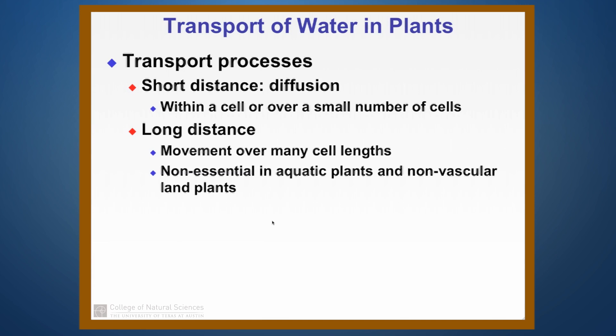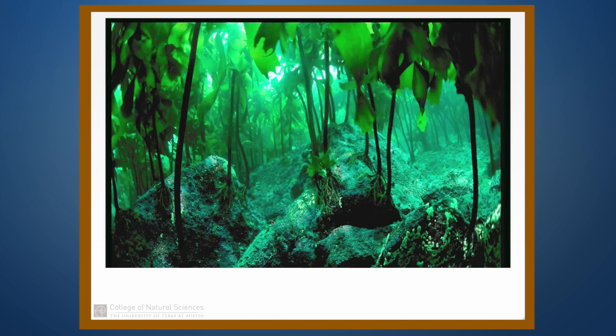Long distance transport is not really essential in aquatic plants and nonvascular land plants. Here we're looking at a kelp bed in the ocean. Because the plants are bathed in water and all of the tissues are relatively thin, there's really no need for any kind of vasculature to move things around, because the plant itself is immersed in the water and never has to move things more than just a few cells.